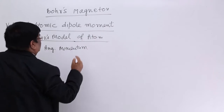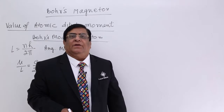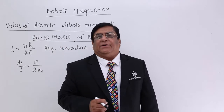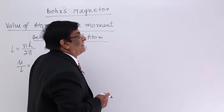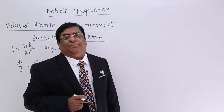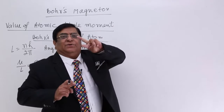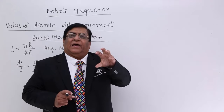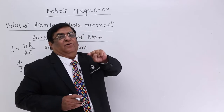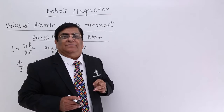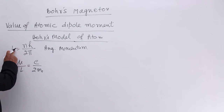In Bohr's model of the atom, we use Bohr's hypothesis. He says that there should be a fixed number of electrons in any orbit, and those electrons create an angular momentum. An electron moving in a circle has mass, velocity, and radius, and because of that it has angular momentum. That angular momentum is given by Bohr's hypothesis as NH upon 2π.